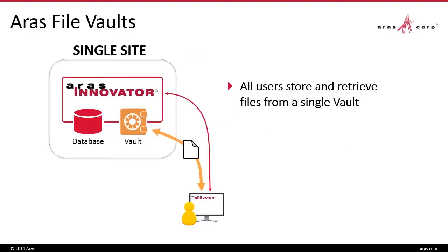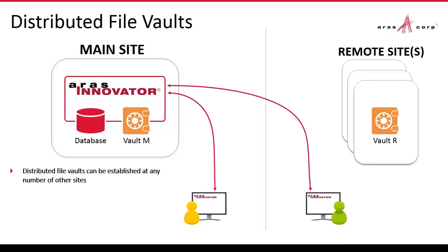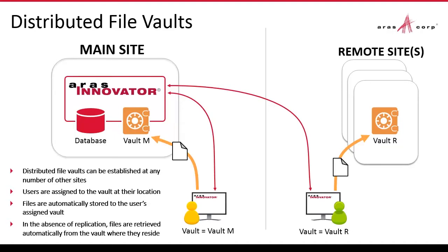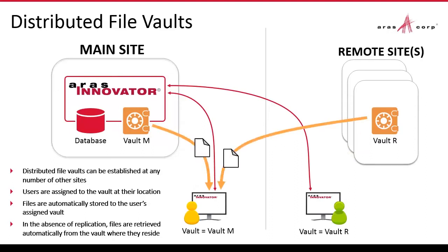ARIS file vaults allow users to store and retrieve files. In a simple case with a single site, all data is managed locally. When you have remote sites, you can establish vaults at those remote sites such that users can be assigned to use the vault closest to them, providing rapid access to file data. In the absence of replication, files are retrieved automatically from the vault in which they reside, whether local or remote. This can result in slowdown if the file is not local to the particular user.